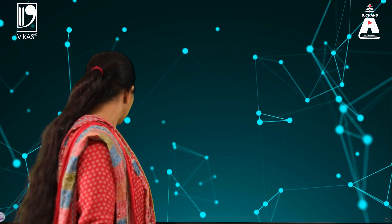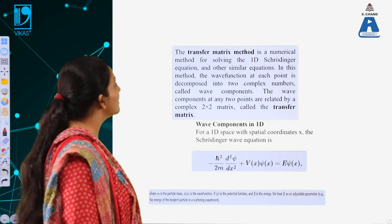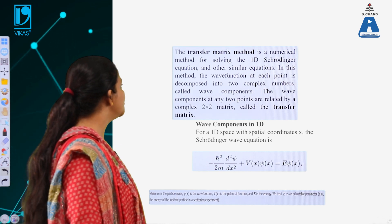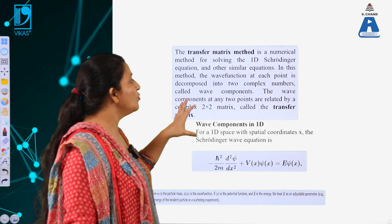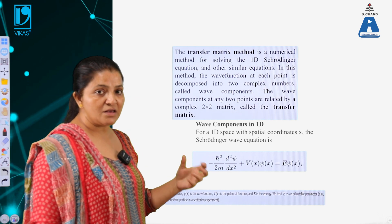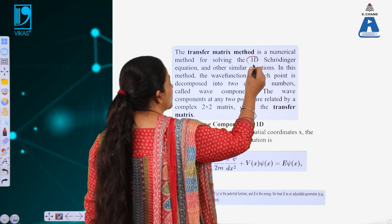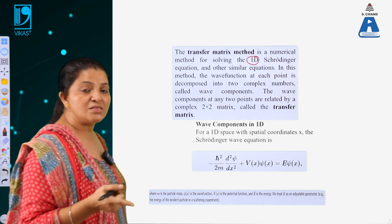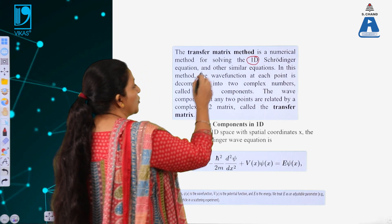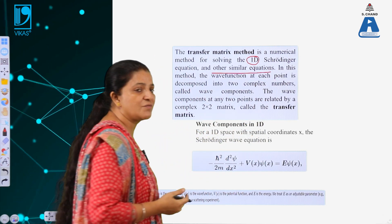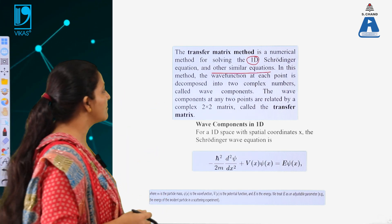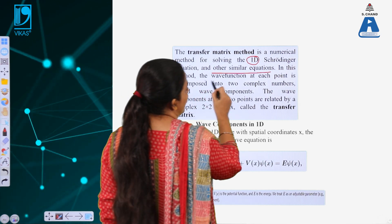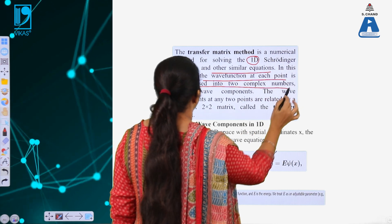Welcome to S.Chand Academy. We will begin the transfer matrix method. The transfer matrix method is a numerical method for solving the one-dimensional Schrodinger wave equation and other similar equations. It is used to describe the motion of a particle in a 1D box, where the potential changes only in one dimension. Similar equations include the hydrogen wave problem or the helium gas problem, which can also be solved using the transfer matrix method. In this method, the wave function at each point is decomposed into two complex numbers.